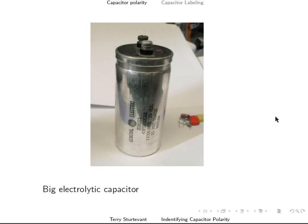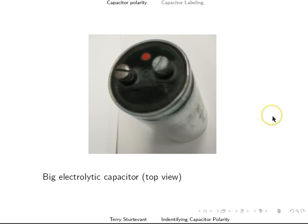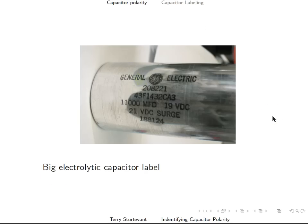Here's a big electrolytic capacitor. Here's what it looks like from the top. Here's the label on the side. You see it's 11,000 microfarads, so that's big.